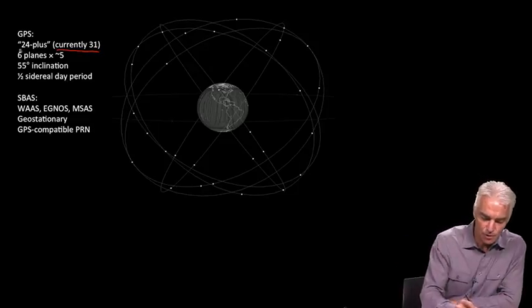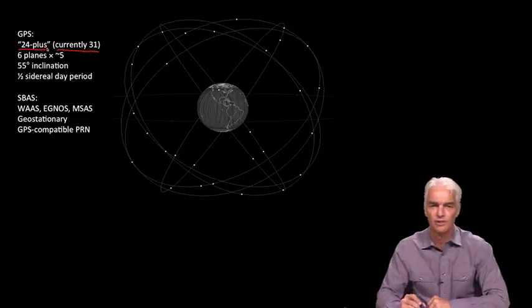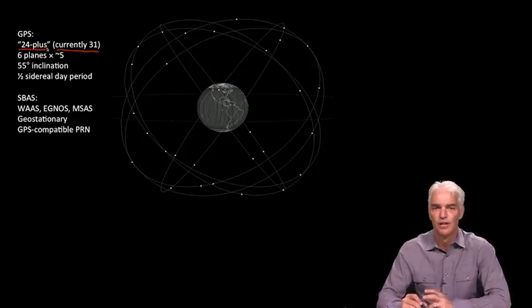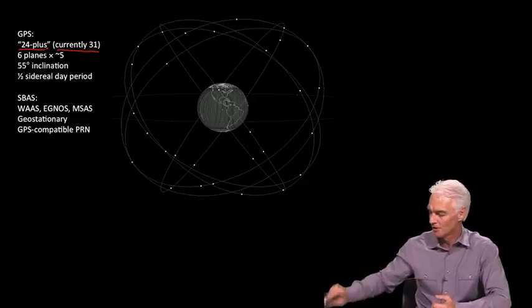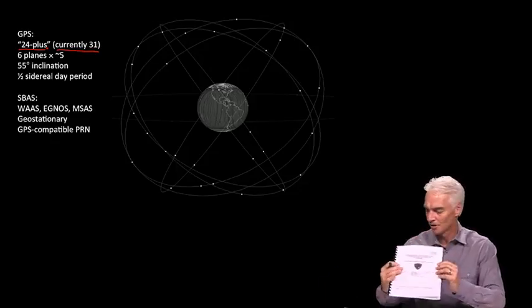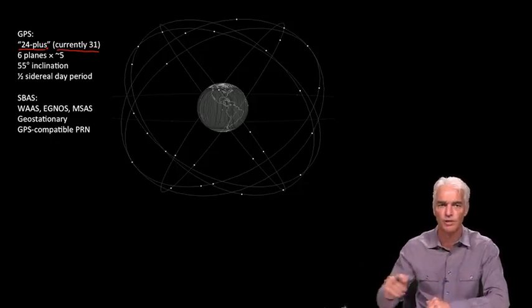However, it is known as a quote 24-plus constellation, and that's because the guaranteed minimum number that the US Air Force guarantees they will provide to you—this is in the interface specification that they provide—they say they will always be 24 satellites.